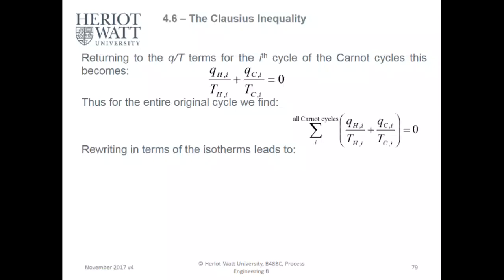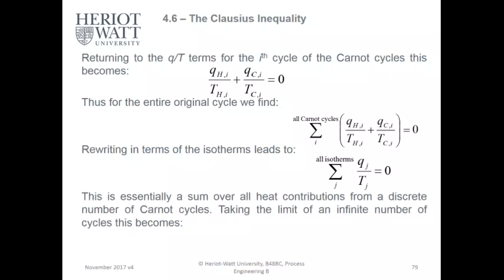Returning in terms of isotherms leads to sum over all isotherms, sum J QJ over TJ equals zero. This is essentially the sum over all heat contributions from a discrete number of Carnot cycles. Taking the limit of an infinite number of cycles, this becomes the integral of DQ over T with respect to R, reversibility.